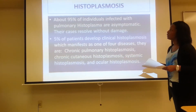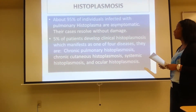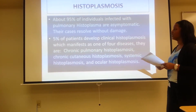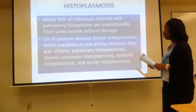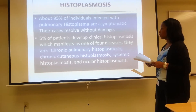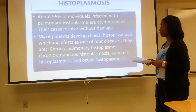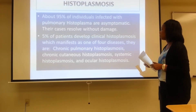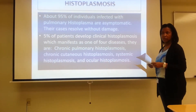Further discussion of histoplasmosis: about 95% of individuals infected with pulmonary histoplasmosis are asymptomatic, and their cases can resolve without any damage. In the 5% of patients who develop clinical histoplasmosis, it manifests as one of four diseases: chronic pulmonary histoplasmosis, chronic cutaneous histoplasmosis, systemic histoplasmosis, and ocular histoplasmosis.